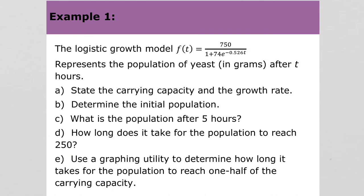Let's look at our example. We're given a logistic growth model: f(t) equals 750 over 1 plus 74 times e to the negative 0.526t. Notice we've already been given a, b, and c. Part a says state the carrying capacity and the growth rate.